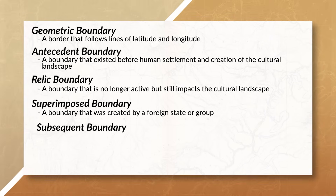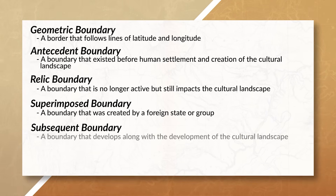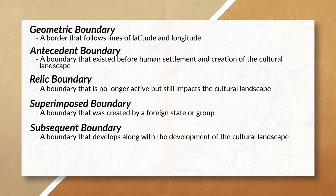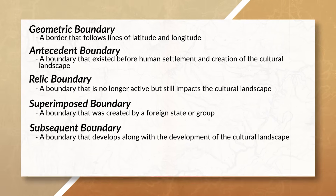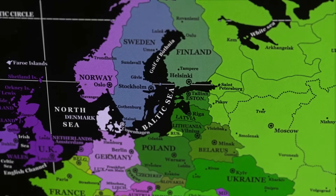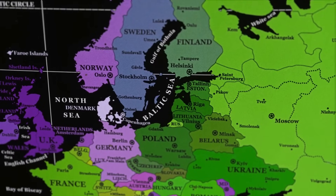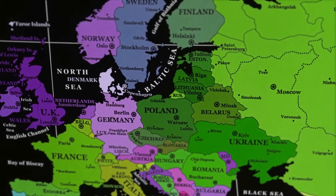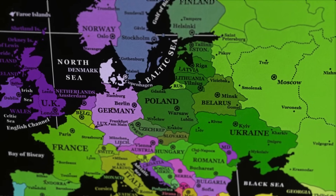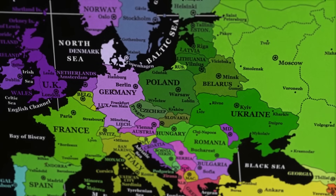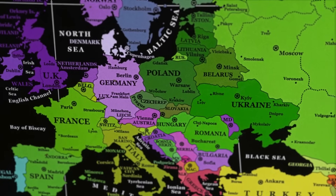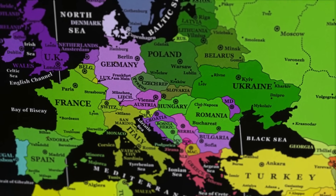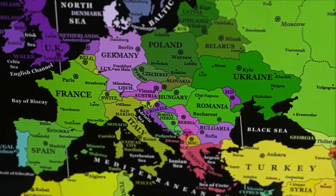Up next we have subsequent boundaries, which is a boundary that develops along with the development of the cultural landscape. Here, culture is the defining factor of the boundary. We can see that the majority of Europe's boundaries are an example of a subsequent boundary, since many of the boundaries are based off the different nations, linguistic groups, and cultural landscapes that existed before the boundaries were created.